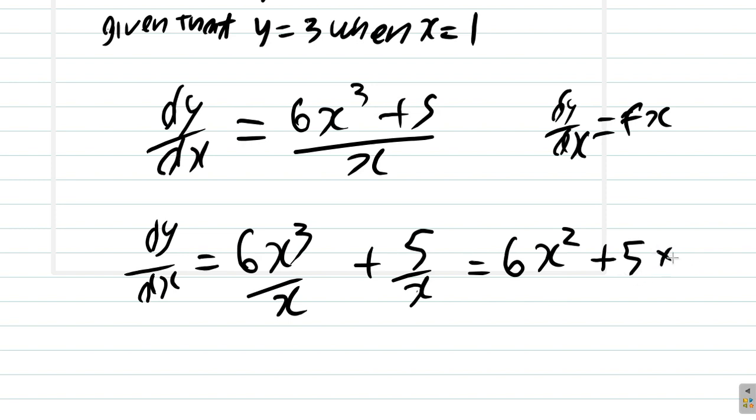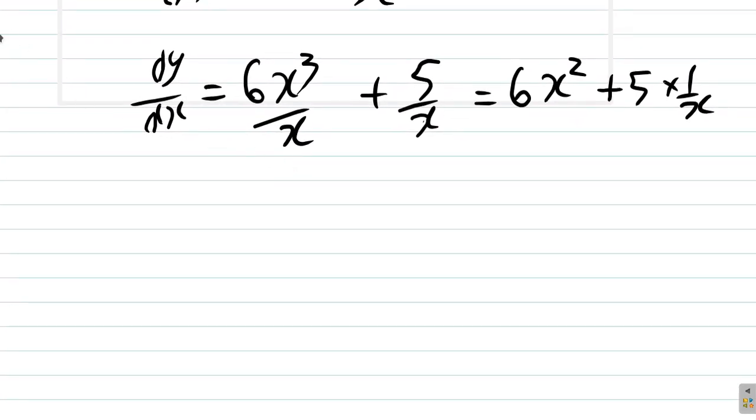We have dy/dx equals 6x² plus 5x to the negative 1, or 5 times 1 over x.